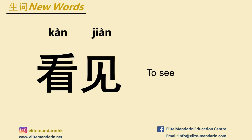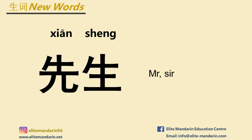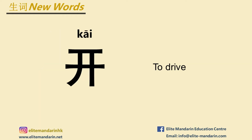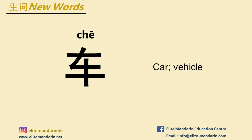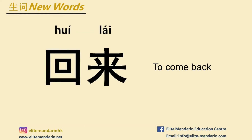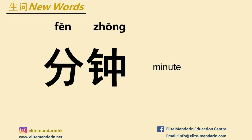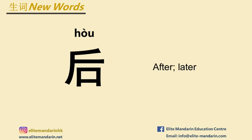Let's see some new words for text 2. 看见 — to see. 先生 — Mr., Sir. 开 — to drive. 车 — car, vehicle. 回来 — to come back. 分钟 — minute. 后 — after.